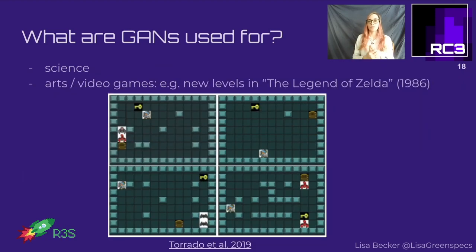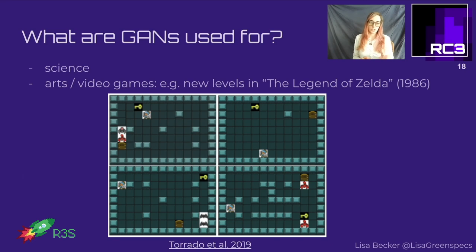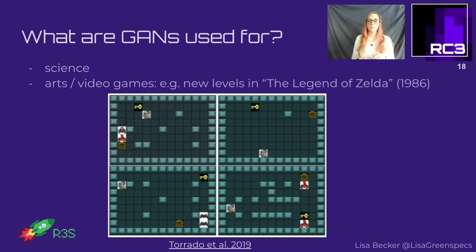GANs are also used for arts and video games. Here we can see they were used with The Legend of Zelda from 1986. In a paper by Torrado et al., a GAN could generate new levels in the game, and about 60 percent of the levels generated were actually playable - compared to other algorithms where only about 10 percent were playable.